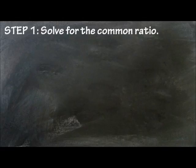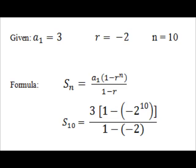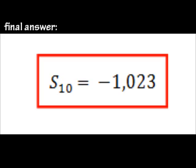First, let's solve for the common ratio: r equals negative 6 over 3, which gives us negative 2. Substituting into the formula, we get S sub 10 equals 3 times quantity 1 minus negative 2 raised to 10, all over 1 minus negative 2. We get S sub 10 equals negative 1,023.